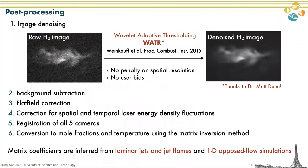In terms of post-processing, the first and most important step is image denoising. This is a raw hydrogen image, and this is the same image after denoising — drastically less noisy. We achieve this good performance using an advanced wavelet adaptive thresholding technique developed by Dr. Matt Dunn at the University of Sydney. This technique applies no penalty on spatial resolution and has no user bias. We then removed the background, corrected for flat field, corrected for spatial and temporal laser energy density fluctuations, and registered all five cameras spatially. The final step is to convert signals into mole fractions and temperature using the matrix inversion method, with matrix coefficients inferred from experiments in laminar jets and laminar jet flames, as well as 1D opposed-flow simulations.